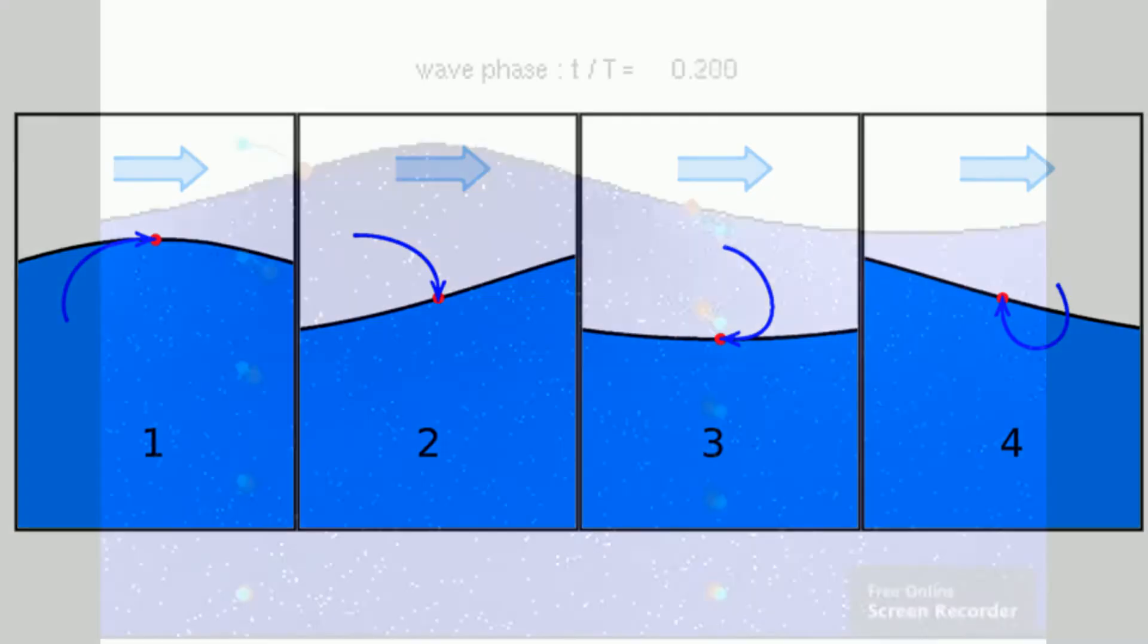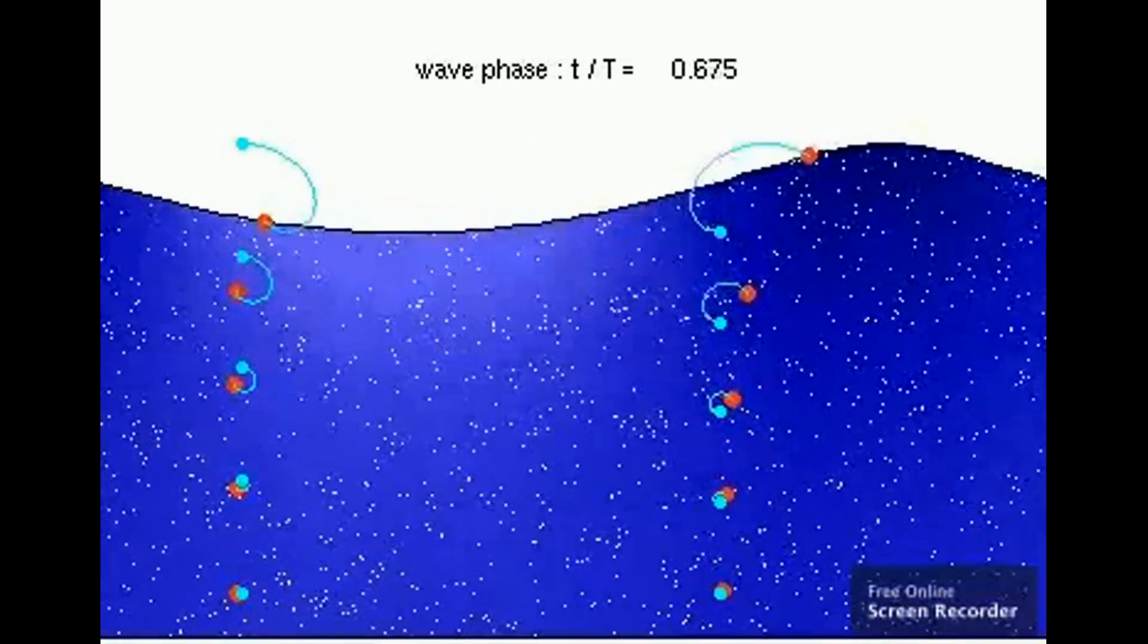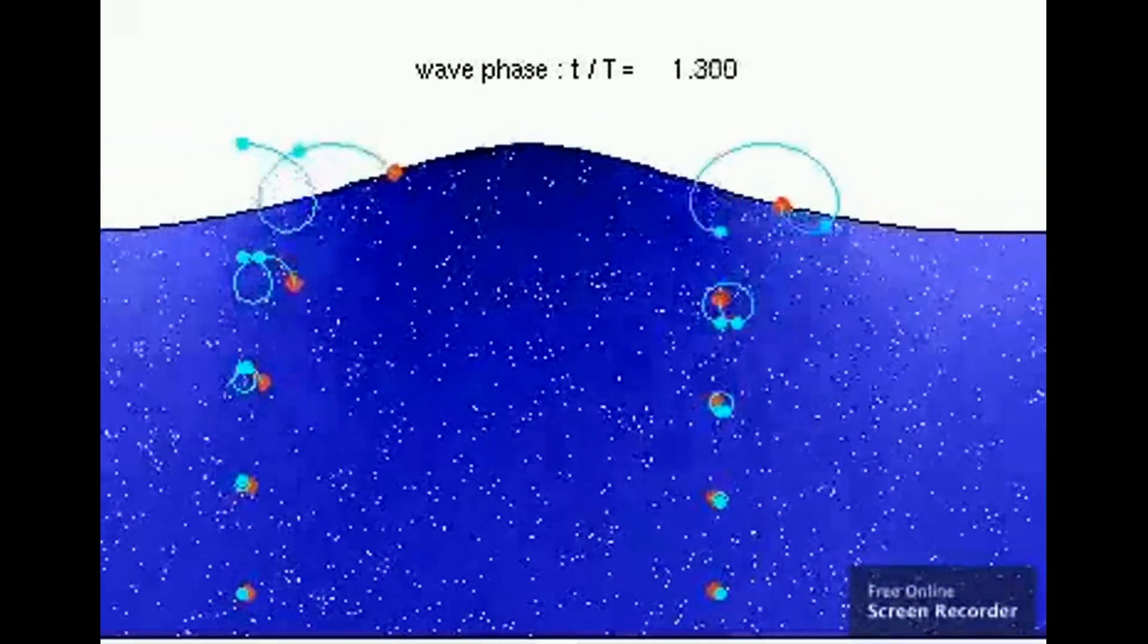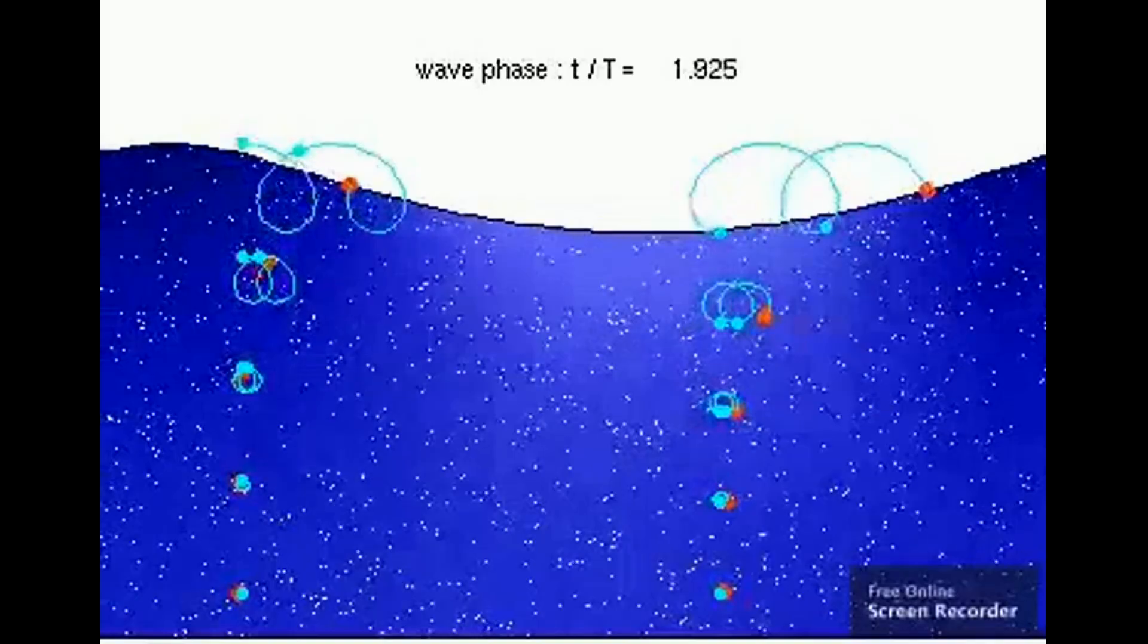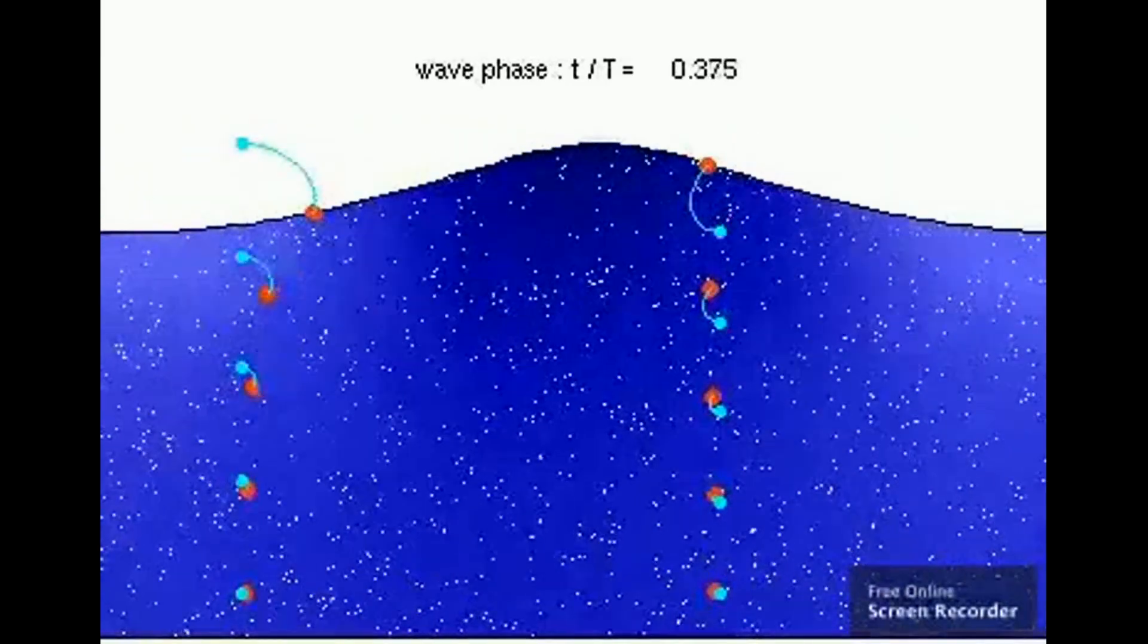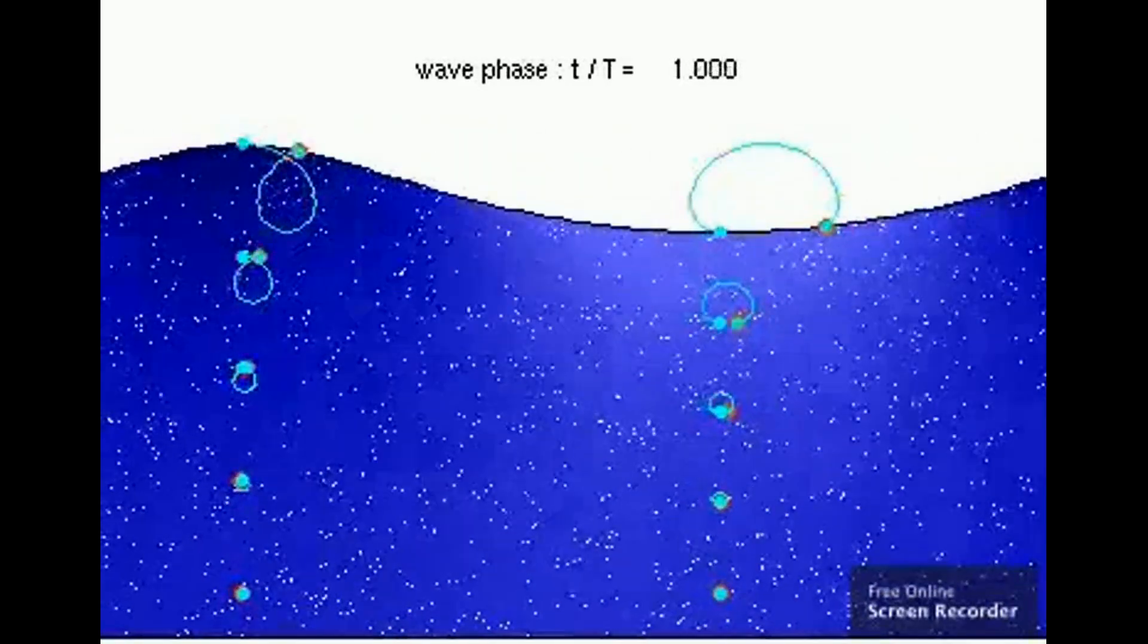The motion is both at right angles and parallel when the particles move in a circle. The circular motion of the particles tends to decrease as you move further down from the surface.